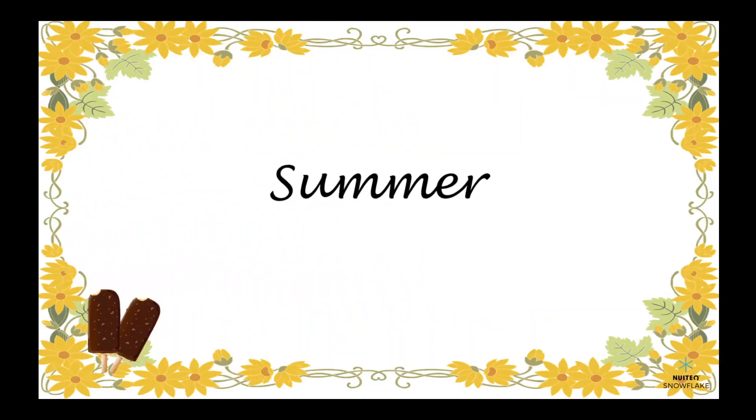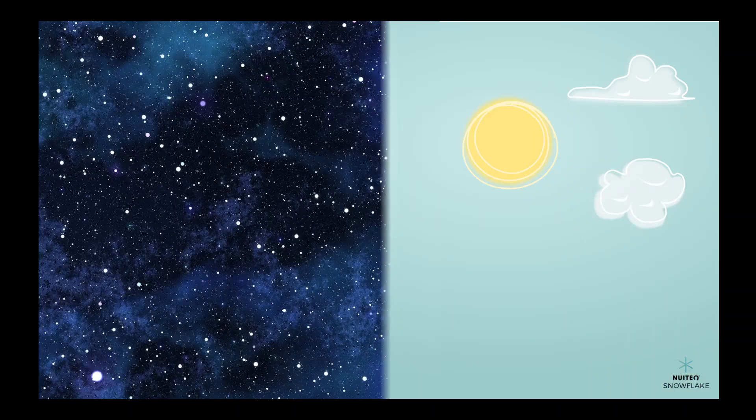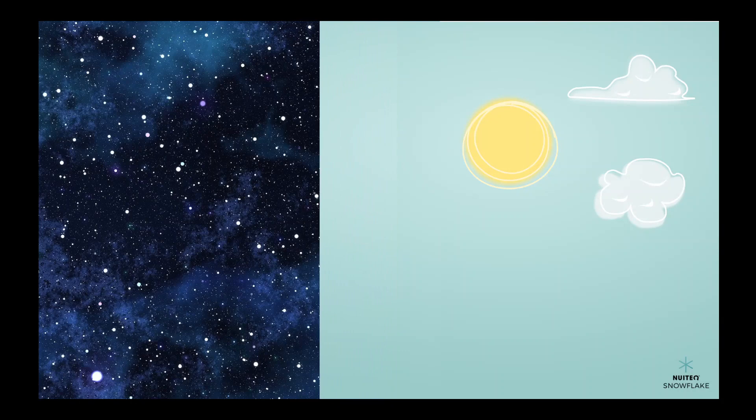Next up is summer. This is the season when the weather is hot and the days are long. During summer, the earth's northern hemisphere is tilted even more towards the sun, which means that it gets a lot of sunlight. This is why we have longer days and shorter nights during the summer months.